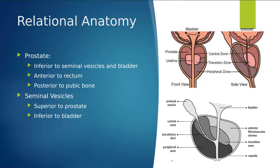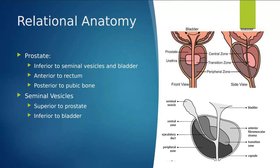Talking about our relational anatomy — there are a ton of structures in the male reproductive system that cross each other, sit next to each other, and communicate with each other, and the prostate is at the epicenter of all of that. The prostate sits inferior to the seminal vesicles and the bladder. The seminal vesicles communicate with the vas deferens and sit on the superior posterior aspect of the prostate. The prostate is located in front of the rectum but behind the pubic bone. For a male patient, directly behind the pubic bone and inferior to the bladder is the prostate, and behind the prostate even further is the rectum. The seminal vesicles sit superior to the prostate and inferior to the bladder.